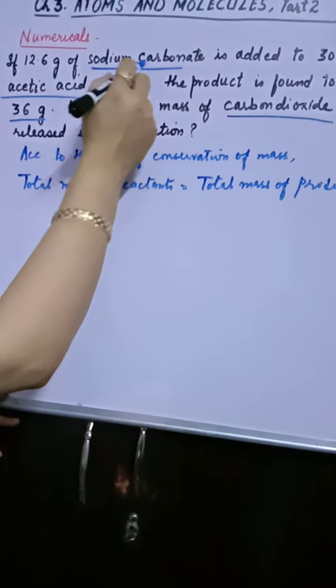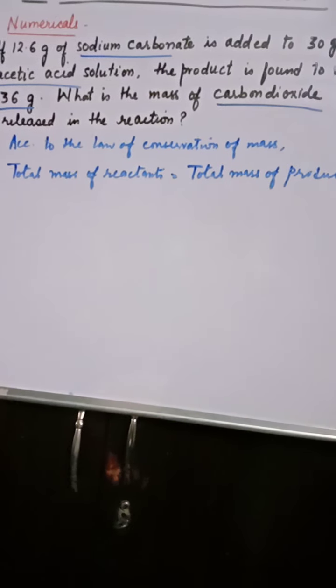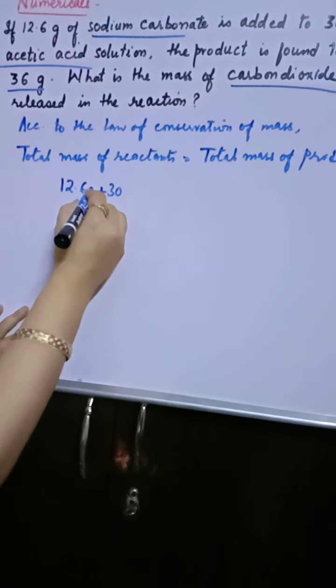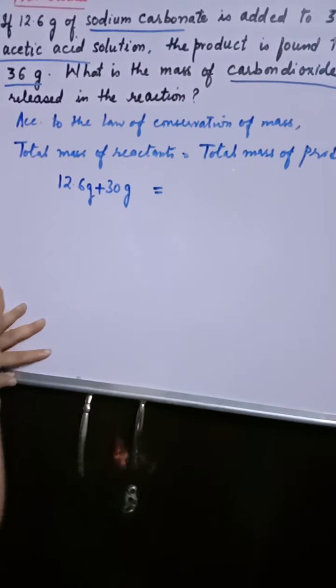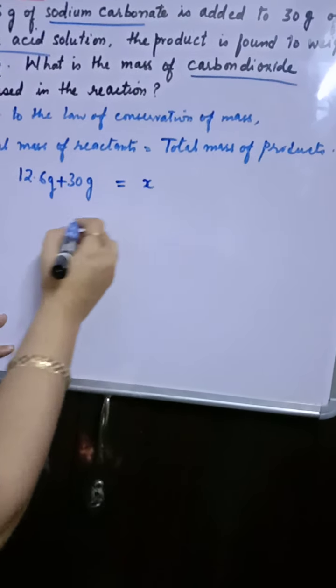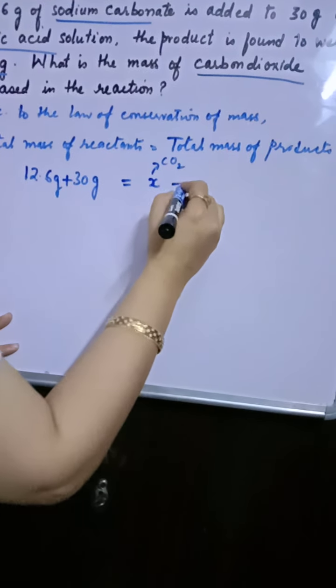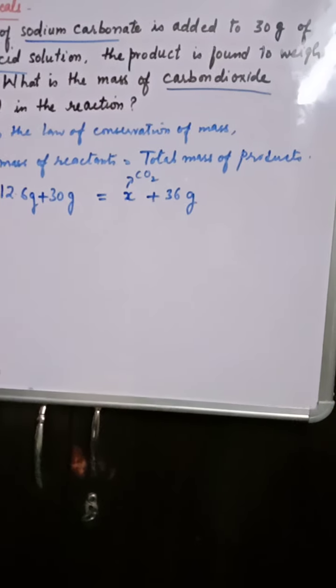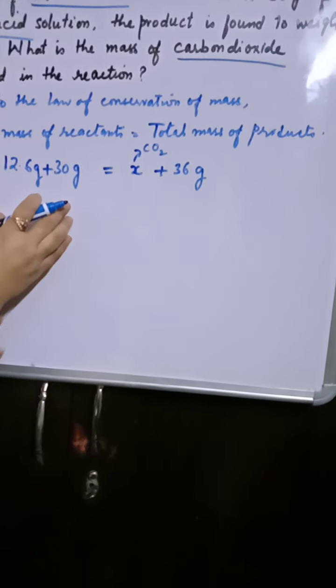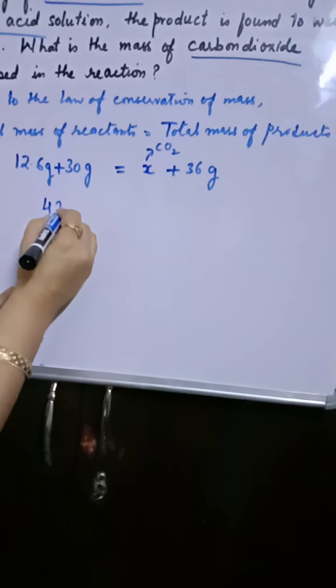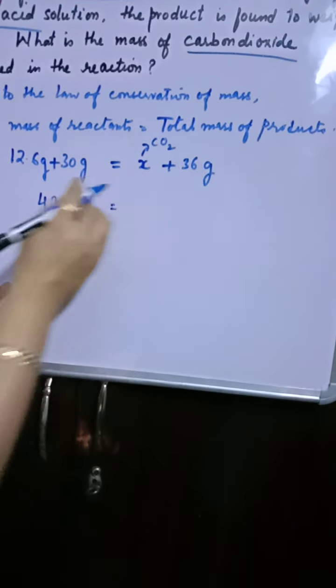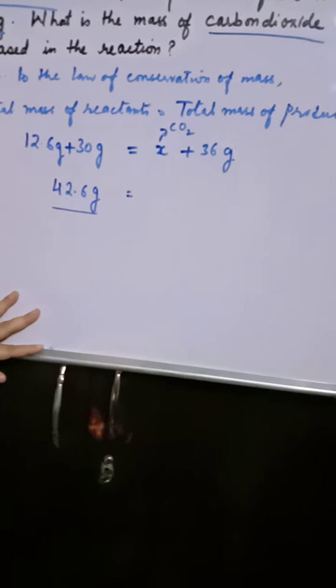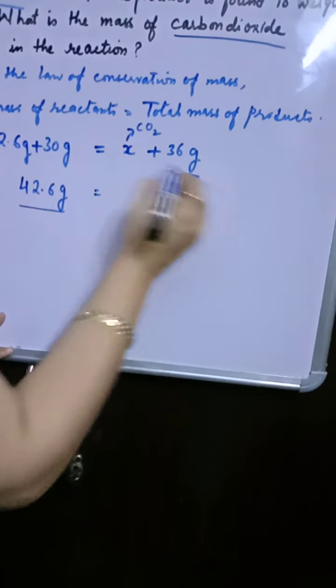Humko pata hai, hamare reactants are what? Sodium carbonate and acetic acid. And their masses are also given to us. So what we need to do is to add 12.6 plus 30. 12.6 gram plus 30 gram will be equal to what? X. X is for what? X is the mass of carbon dioxide plus 36 gram. The product which has been formed along with carbon dioxide. If you will add these two values, so what you will obtain? 42.6 gram. Right? Aur aapne jab ek baar jab aapne weigh kiye, contents saare weigh karein, toh aapne dekha ki aapne itna amount liya tha reactant ka. But jab reaction ho gaya, toh what you obtained in the end? 36 gram.